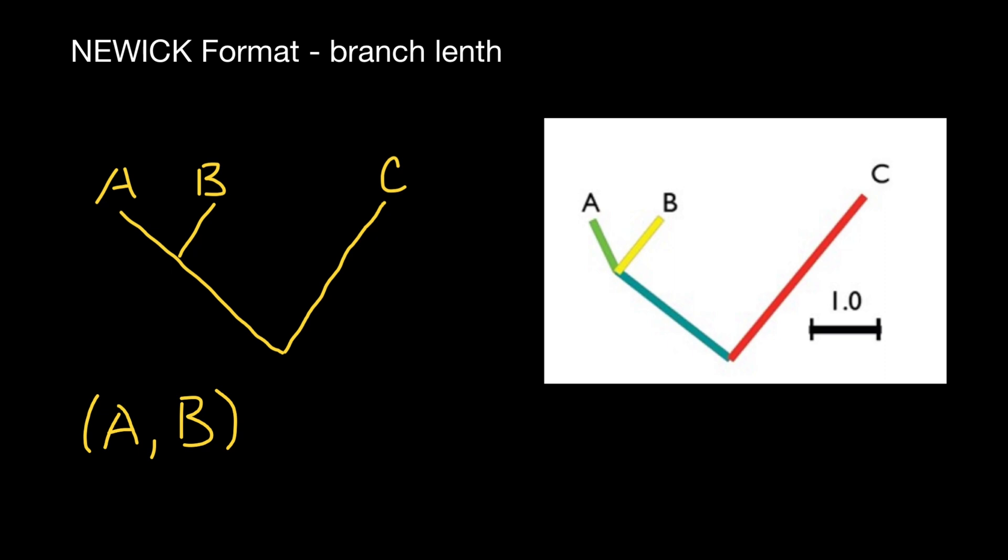And as you see, we gave a description of this part of the phylogenetic tree. Now we also add comma, which stands for this root. And next we add species C and enclose them in double parenthesis.